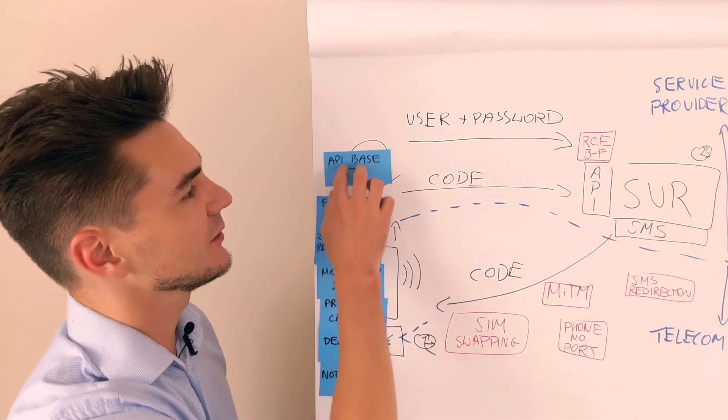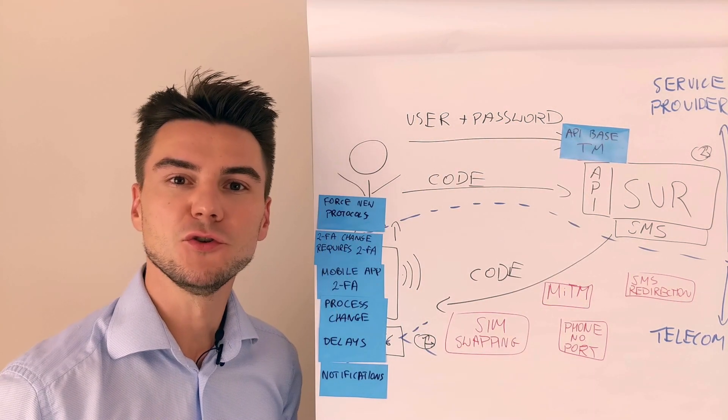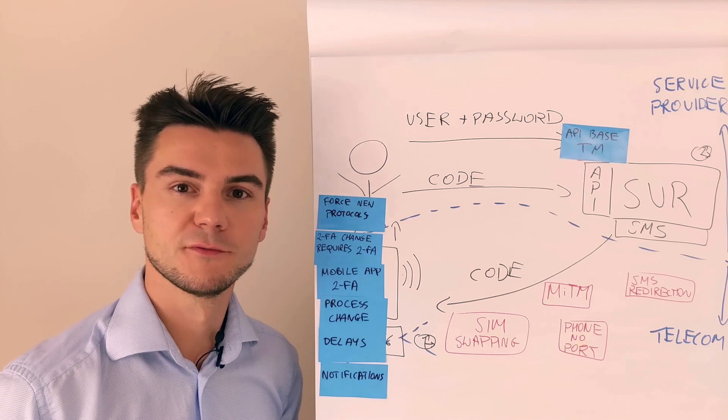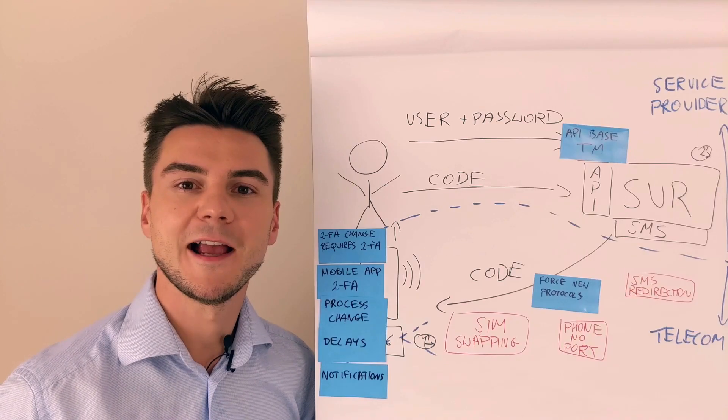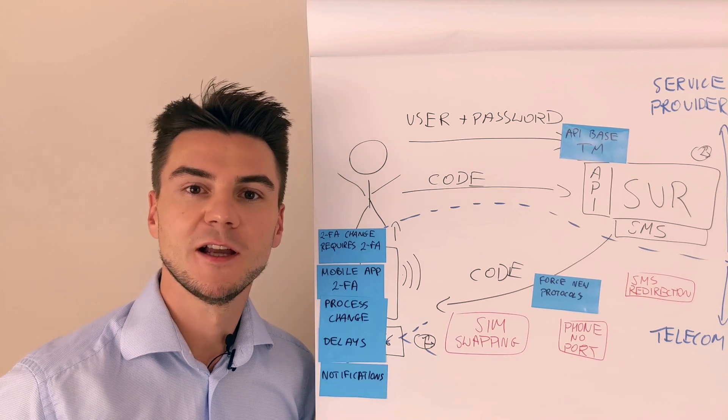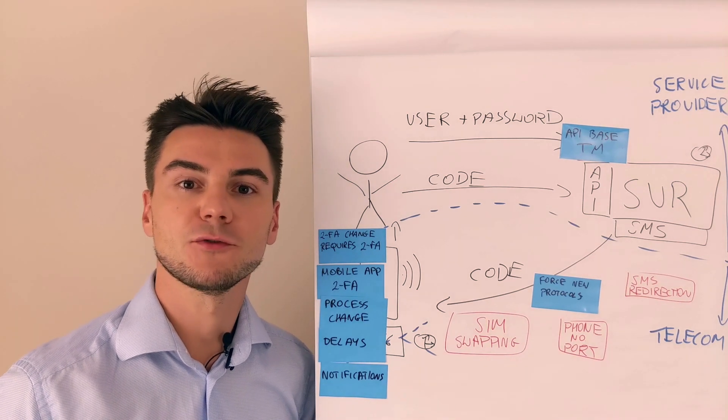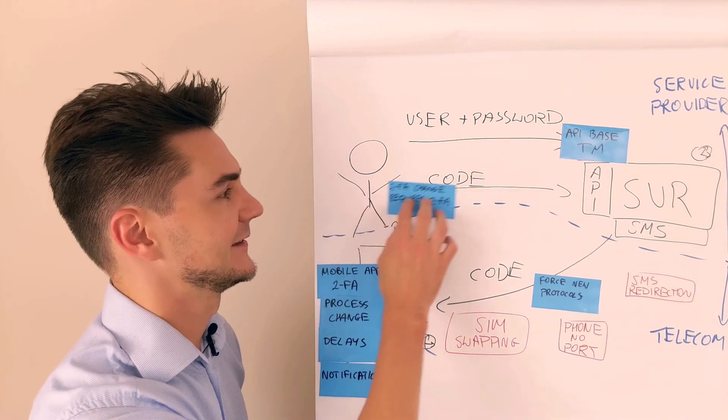Instant mitigations. Based threat models for the APIs, enforce new protocols, either on your own phone or as a telecom for all users. Also, any 2FA device change, such as phone number change, should require 2FA authentication from the old device.